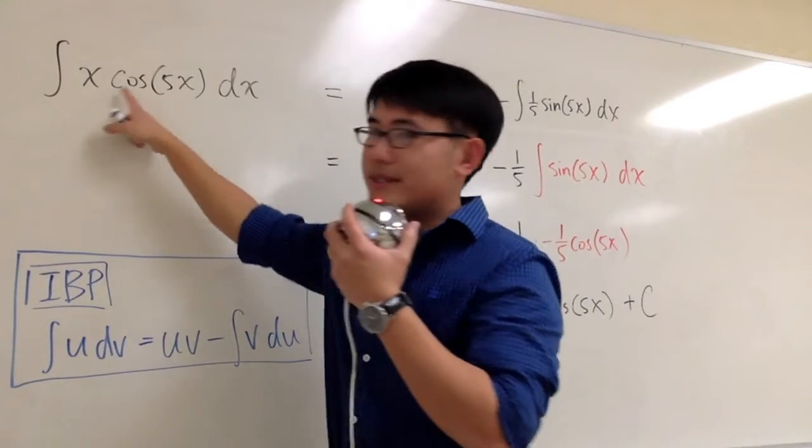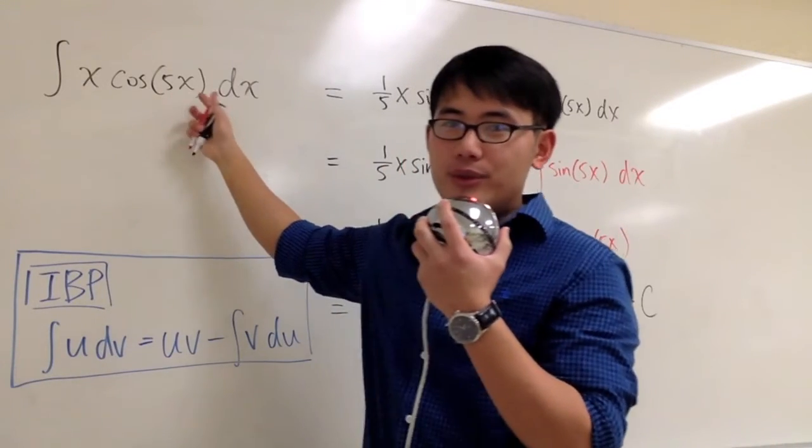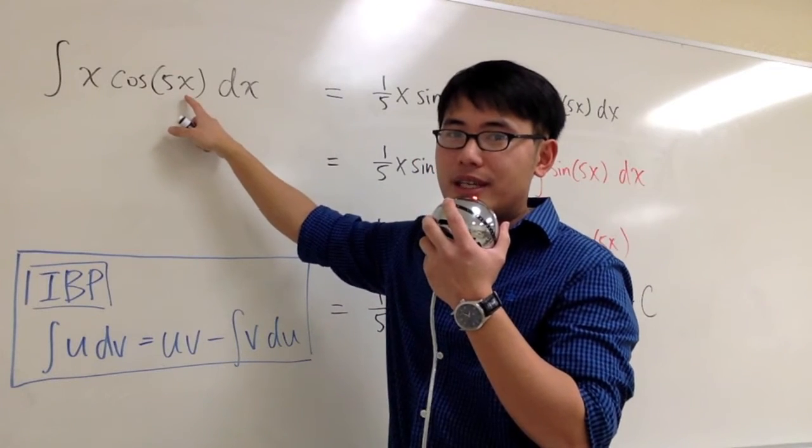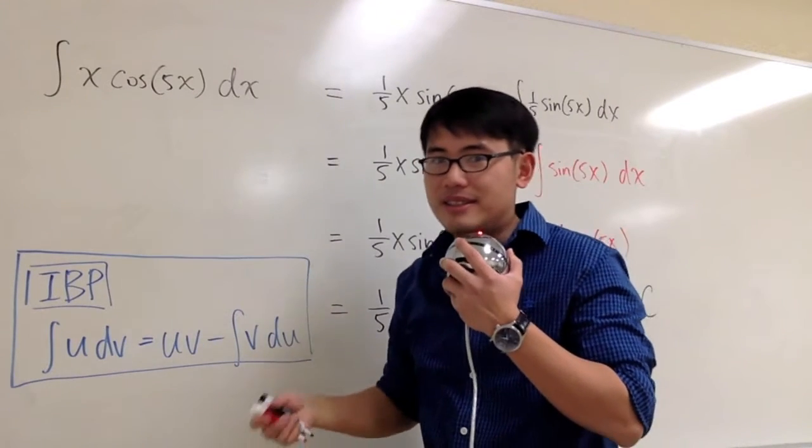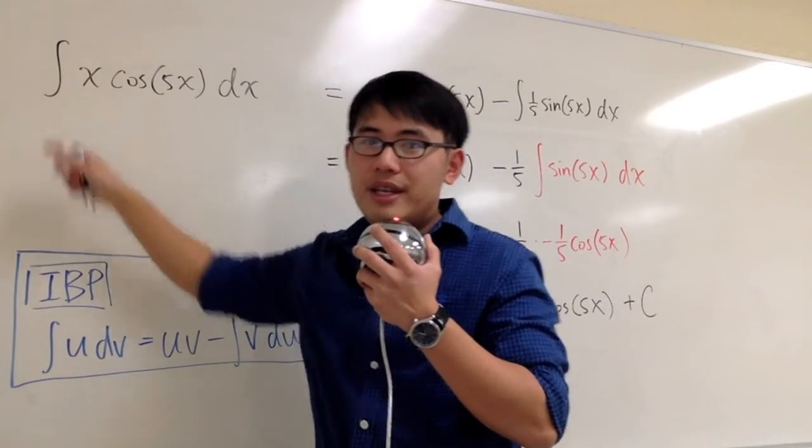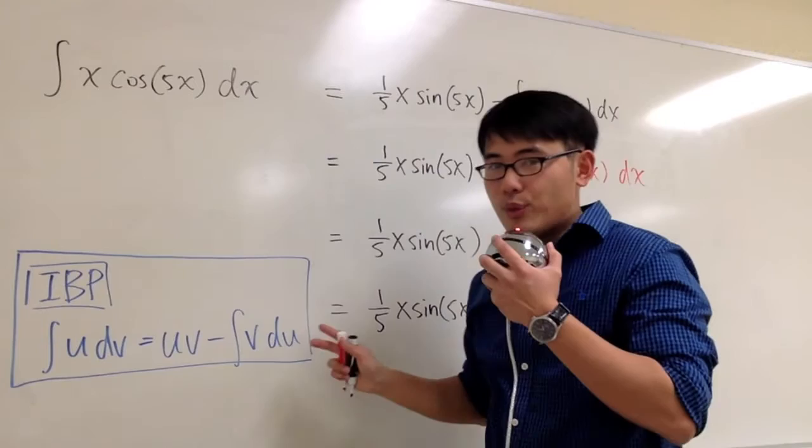Let's integrate x times cosine of 5x. We can try to use the u-substitution. Maybe we can say that u is equal to 5x, but then the derivative of 5x is just a 5. We cannot cancel all the x right here, so the u-substitution wouldn't work for us.